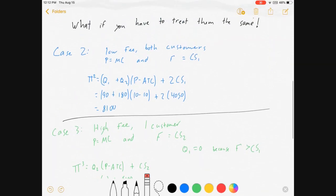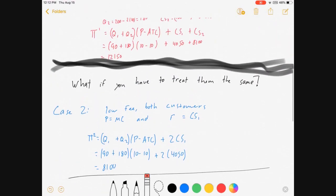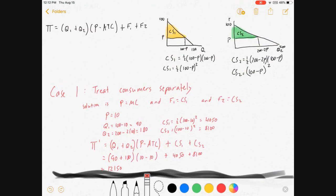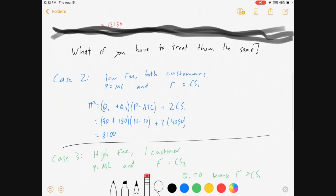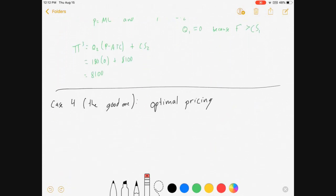Those are not an impressive way of doing this. We haven't done anything new; we've taken all the same information we had at the beginning and just tried to wiggle it around different ways, and we see it's not very helpful. Case 4 is our good one: we actually do optimal pricing. Here comes the calculus, guys. We're going to keep both consumers by ensuring that the fee is less than or equal to the minimum consumer surplus. In our case, that's consumer 1.